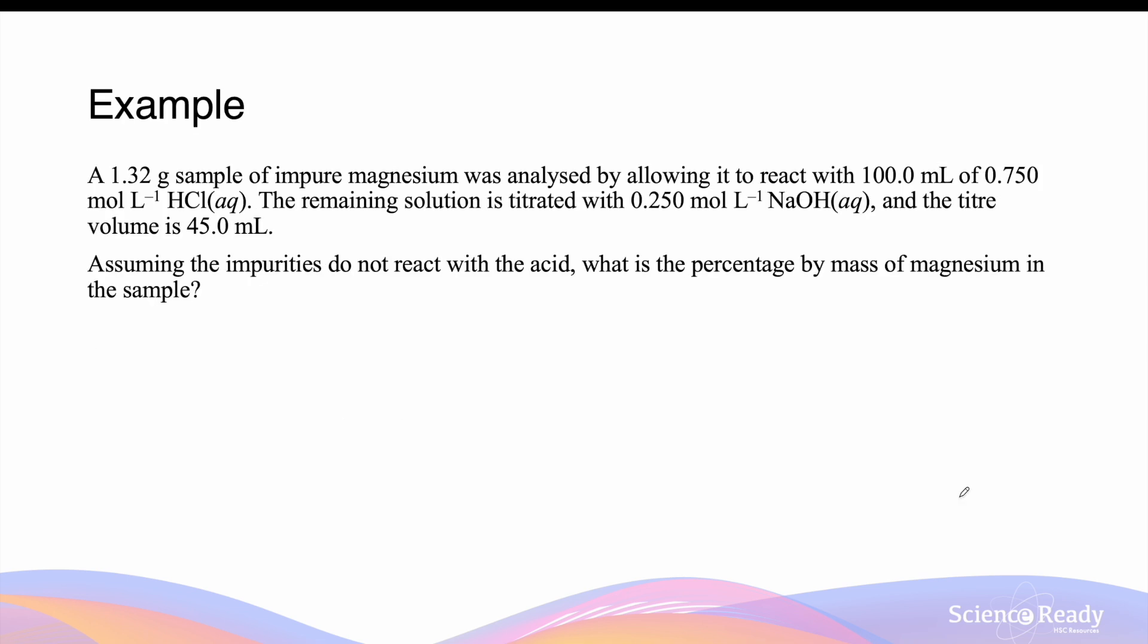Let's go through a few examples. A 1.32 gram sample of impure magnesium was analyzed by allowing it to react with 100 mL of 0.75 mol per liter of hydrochloric acid. The remaining solution is titrated with 0.25 mol per liter of sodium hydroxide, and the titre volume for this titration is 45 mL. Assuming the impurities in the magnesium don't react with the acid, what is the percentage by mass of magnesium in this sample?